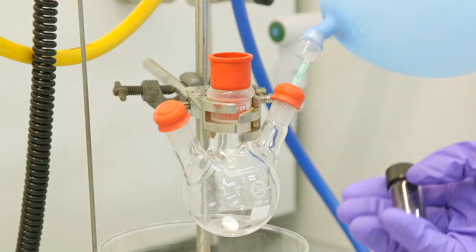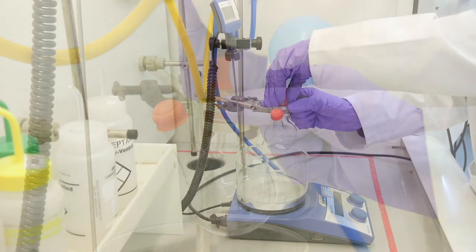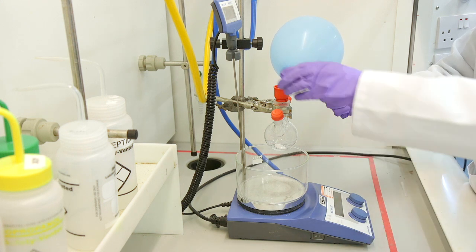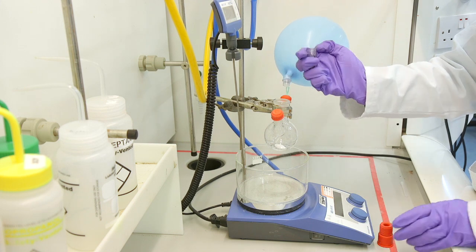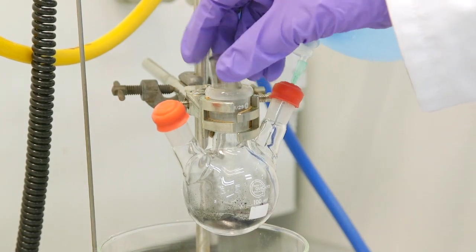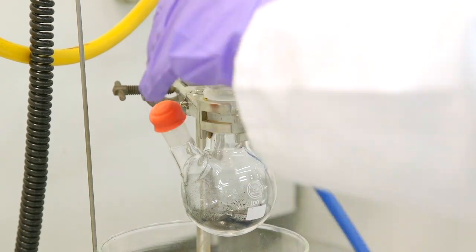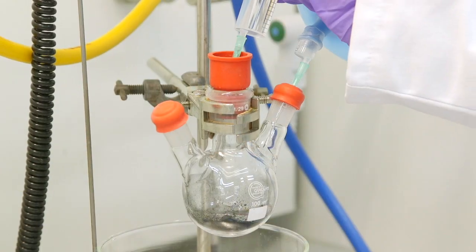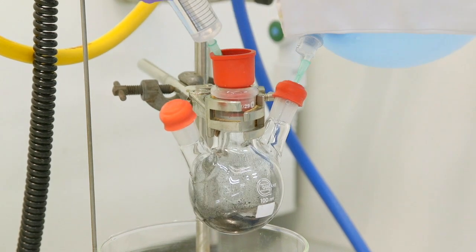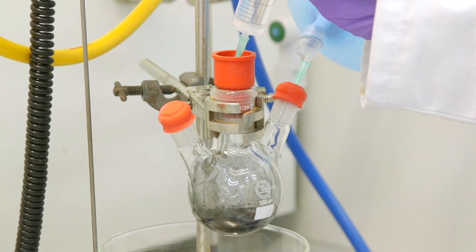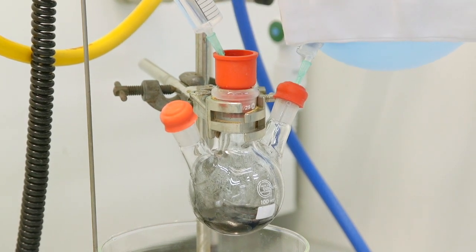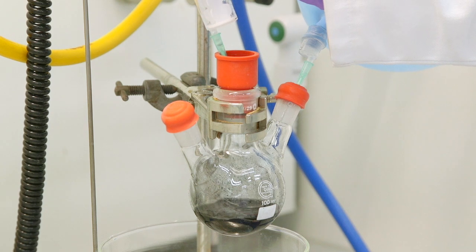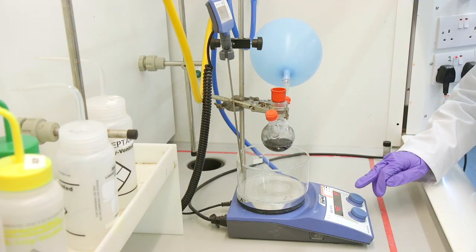We will now add our palladium catalyst through one of the necks to the flask. This is then followed by washing the neck of the flask with our reaction solvent which in this case is ethanol. We can now begin stirring the reaction.